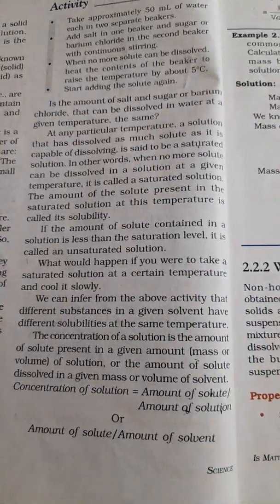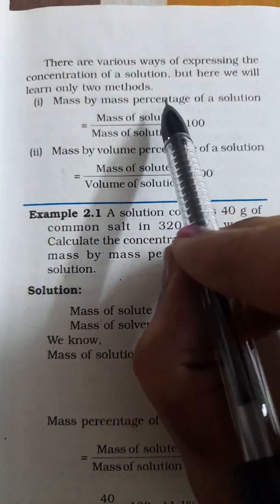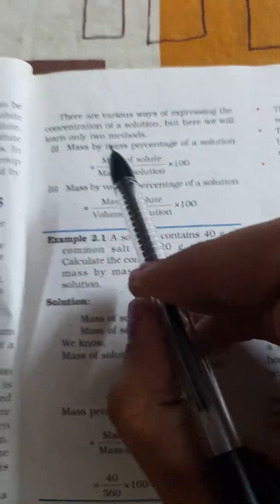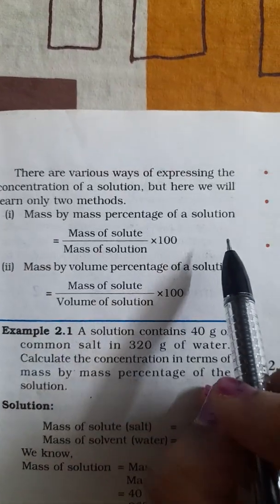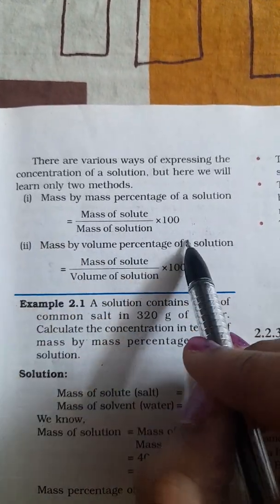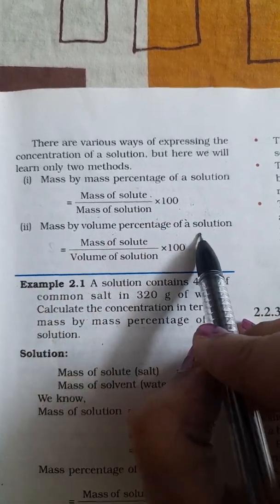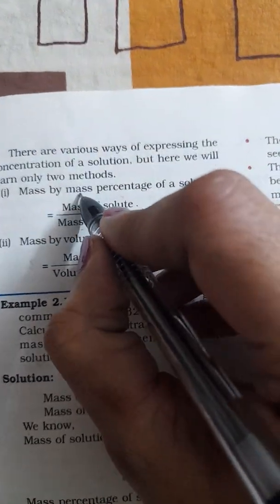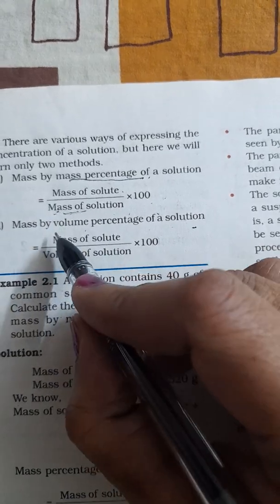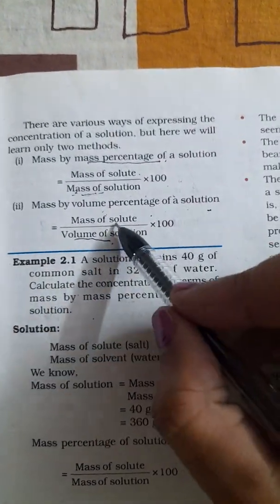There are many ways to express the concentration of a solution, but we will learn two methods. The first is mass by mass percentage: mass of solute divided by mass of solution, multiplied by 100. The second is mass by volume percentage: mass of solute divided by volume of solution, multiplied by 100. In the second formula, the denominator is the volume of the solution, not the mass.